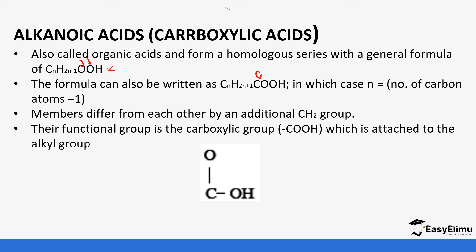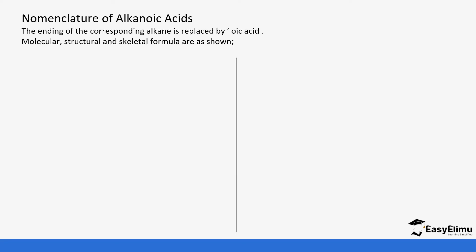In qualitative analysis we use this functional group to show the presence of a carboxylic acid. This is the basic unit — remember this is a double bond — and then it is attached to the alkyl part. When looking at the nomenclature of the acid, it's based on the alkane: when you look at an alkane that ends with an E, we are going to replace it with OIC.